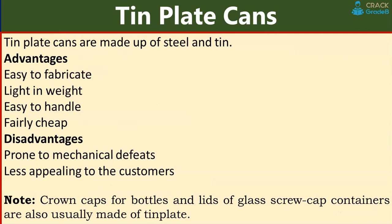Tin plate cans are made up of steel and tin. Advantages: these are easy to fabricate, light in weight, easy to handle and fairly cheap. Disadvantages: they are prone to mechanical defects and less appealing to customers. Note: crown caps for bottles and lids of glass screw cap containers are also usually made of tin plate.